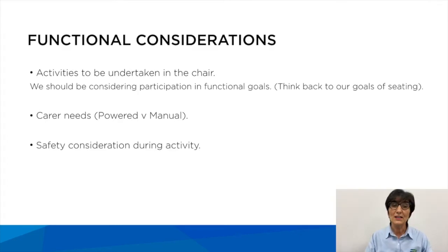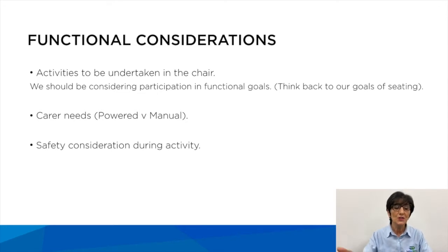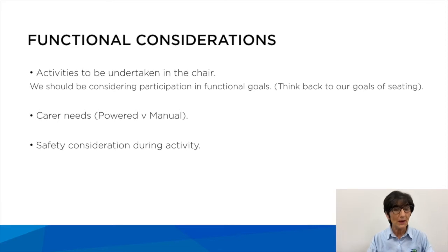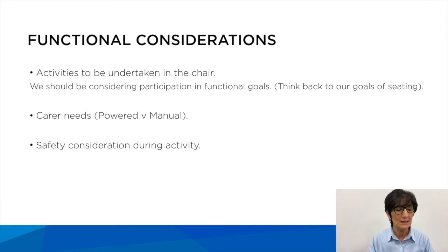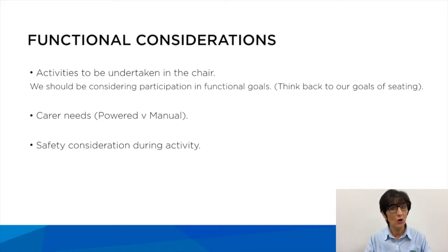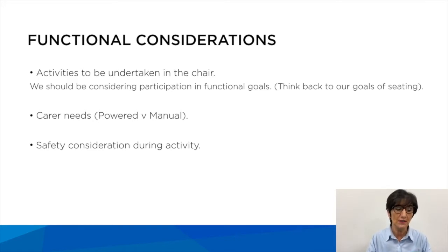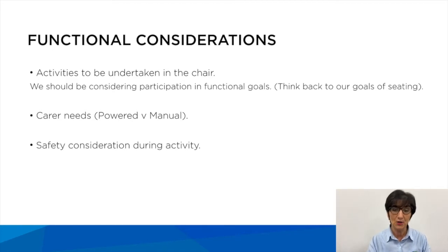We want to look at the functional considerations — the activities undertaken in the chair. We should be considering participation in functional goals, so think back to your goals of sitting and what you want to achieve for this patient. Consider whether you want a power chair or a manual chair depending on the care needs and the cognitive ability of the person. Safety should always be a high priority.